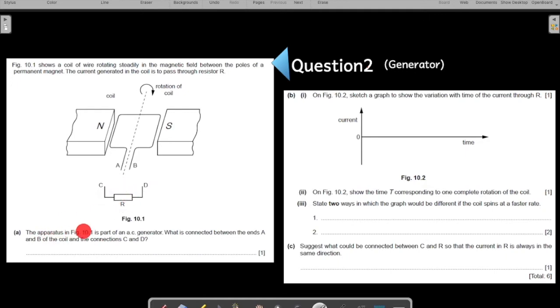The apparatus in the figure is a part of an AC generator. What is connected between the ends A and B of the coil and the connection C and D? So this part of the connection, if you see, which I am showing with my pointer and the other point between E and D, it is not a complete picture. You have to identify what goes in this space. So if you have gone through the chapter on generator,